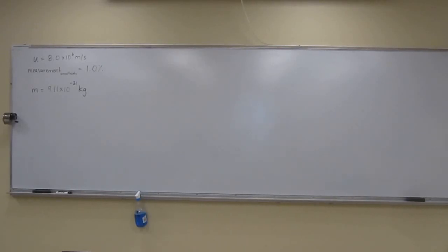So let's try this Heisenberg uncertainty example. It says an electron is moving at a speed of 8.0 times 10 to the 6 meters per second. If the uncertainty in measuring the speed is 1.0% of the speed, calculate the uncertainty in the electron's position.